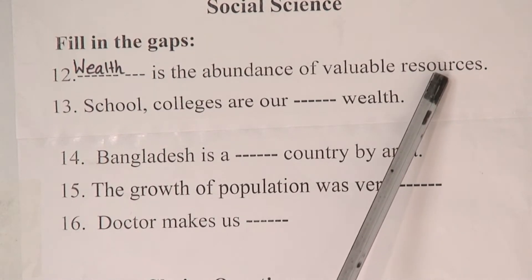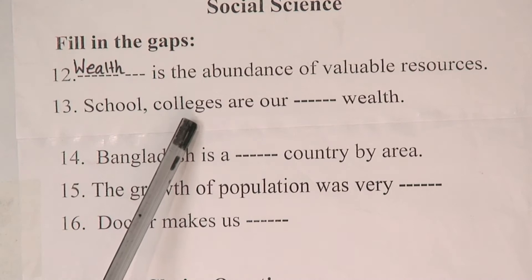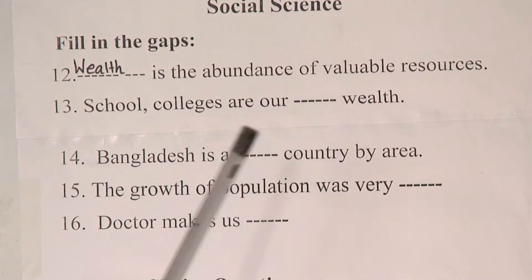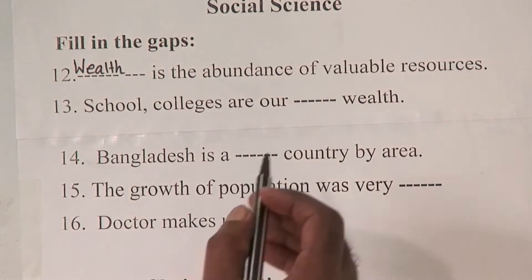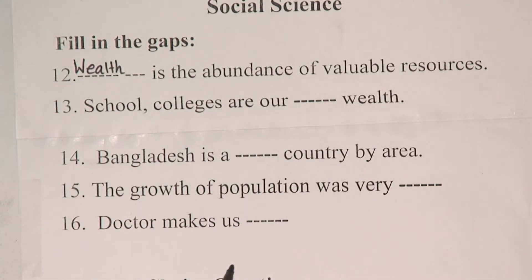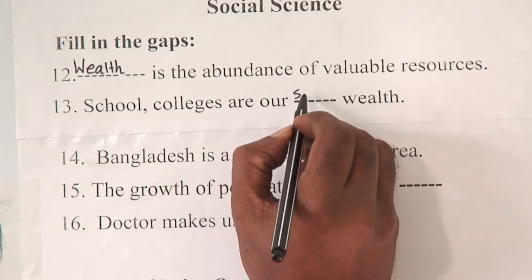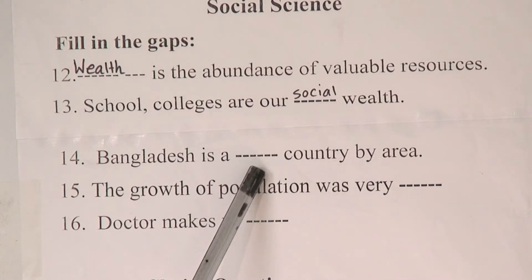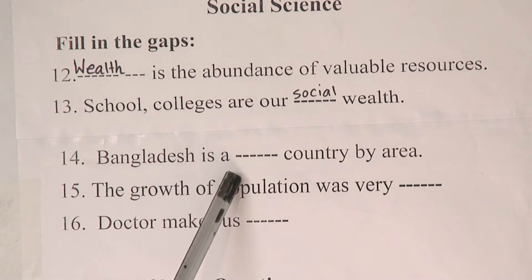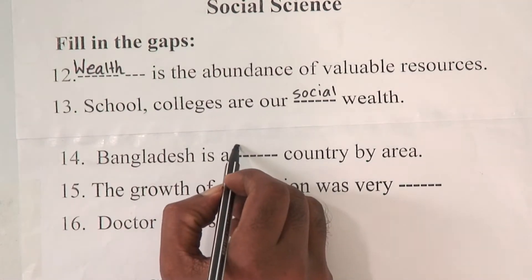Number 13: 'School and colleges are our dash wealth.' The answer is social wealth. We know there are two types of wealth — one is social, another one is national. So school and colleges are our social wealth.